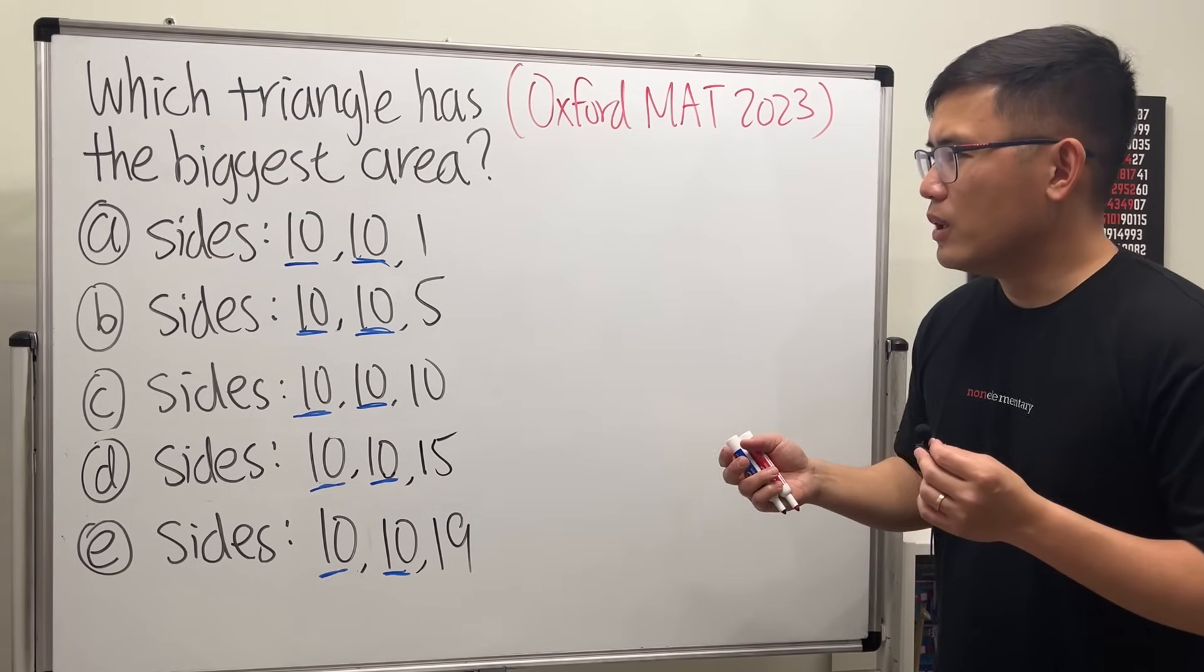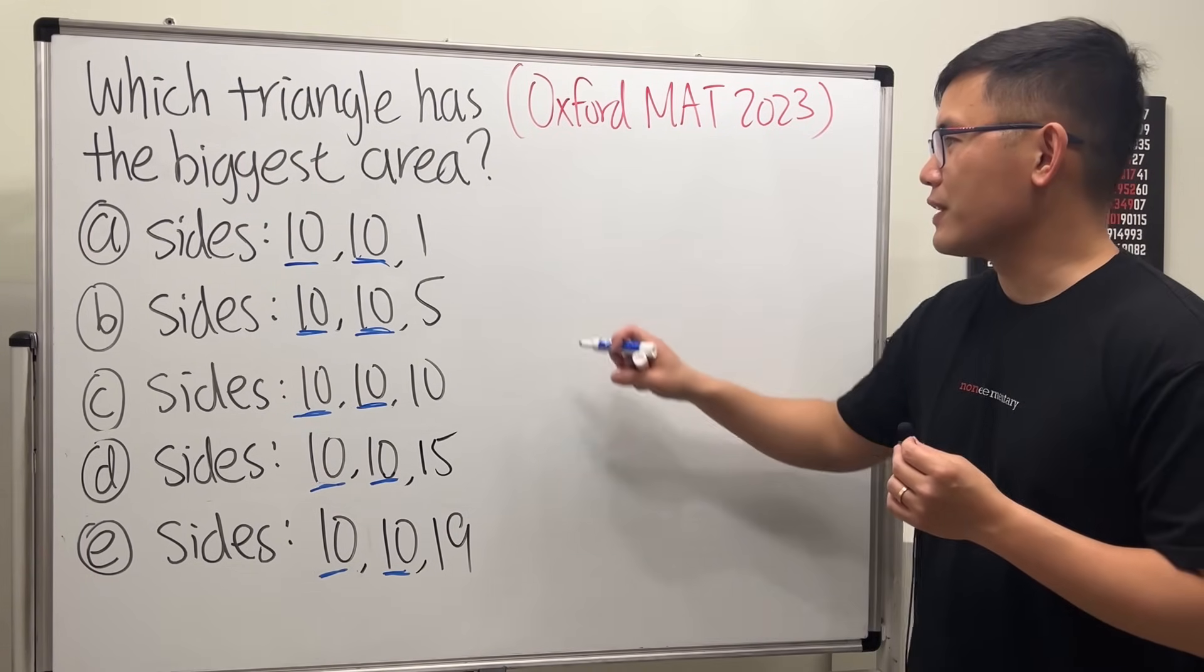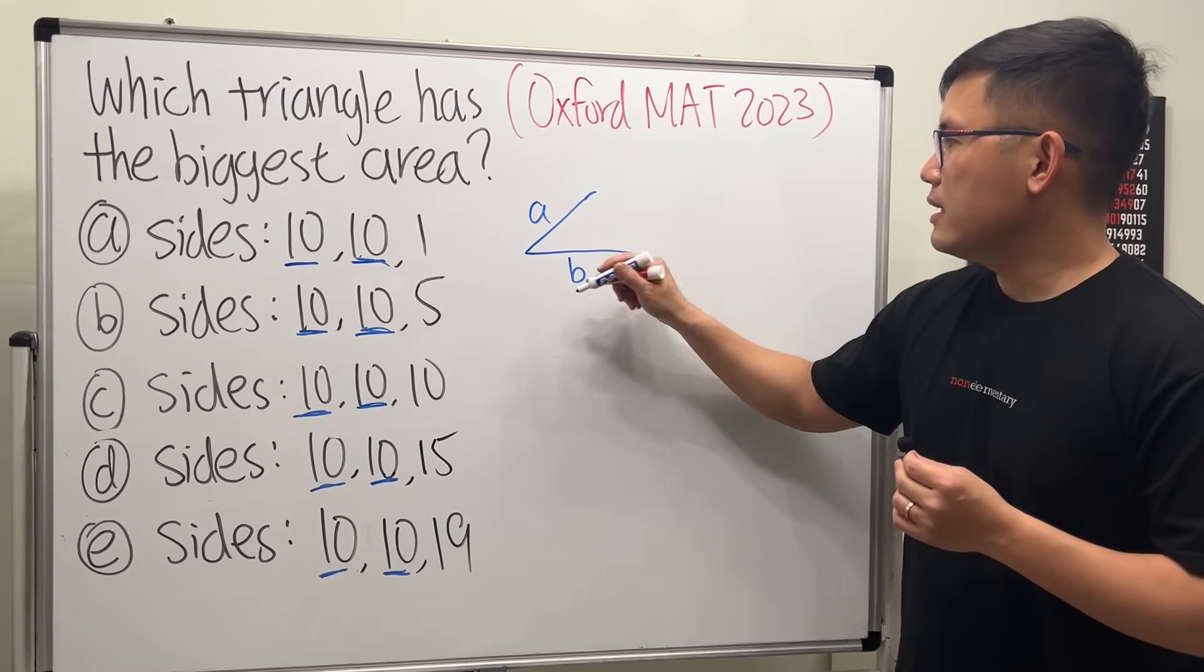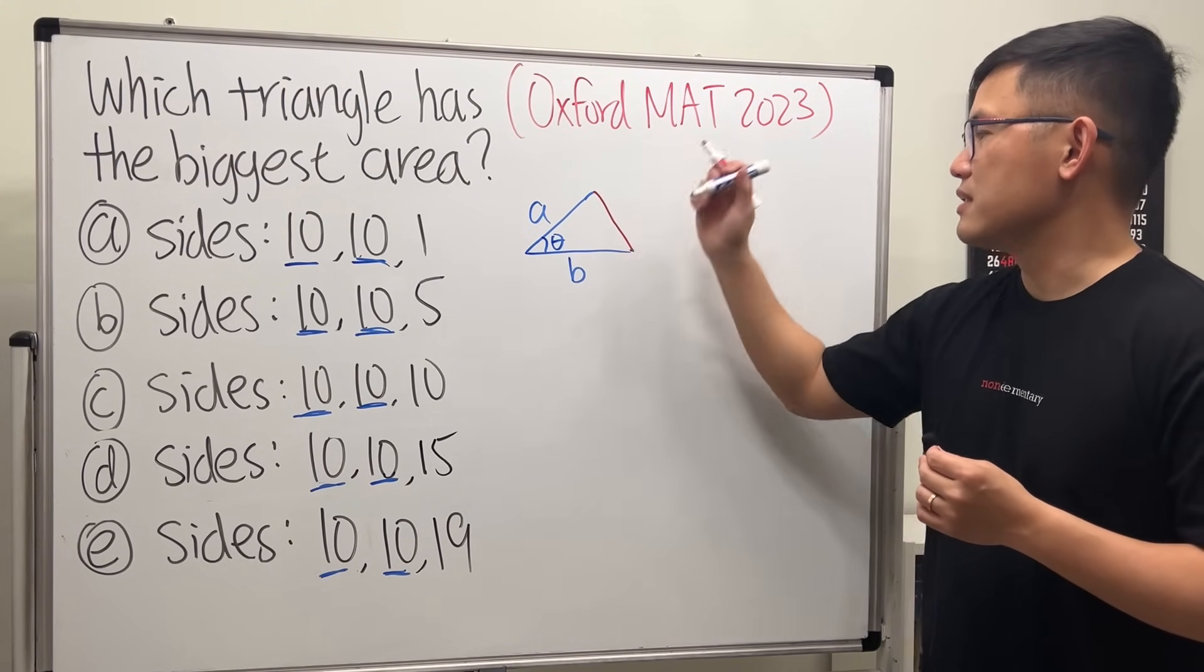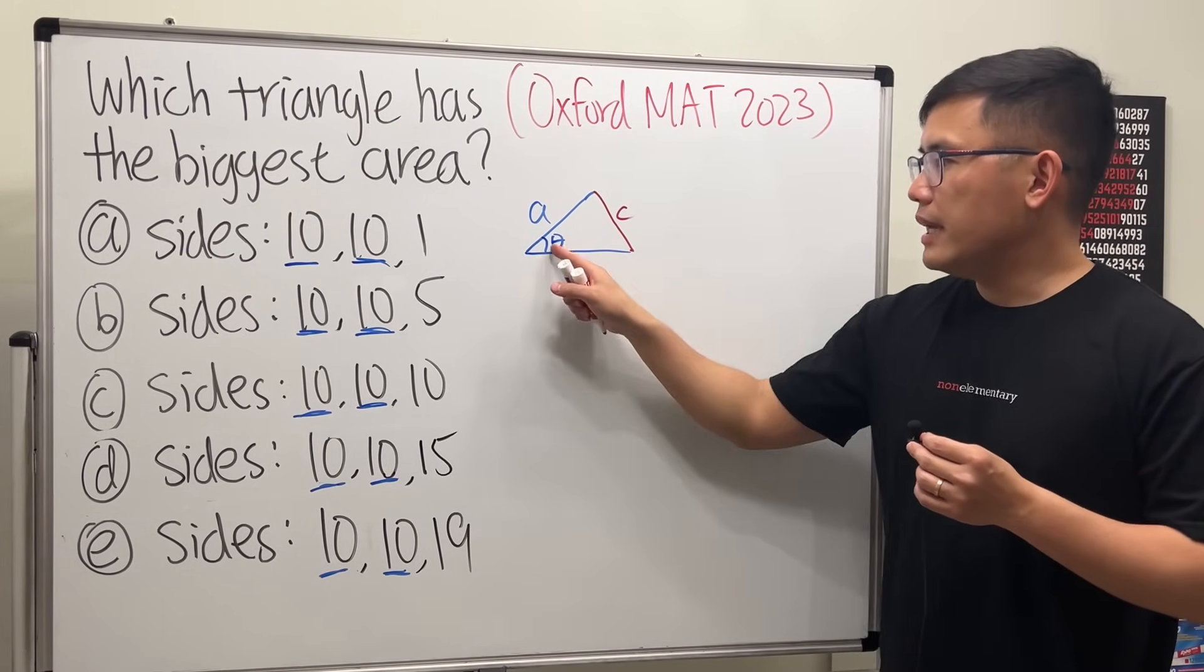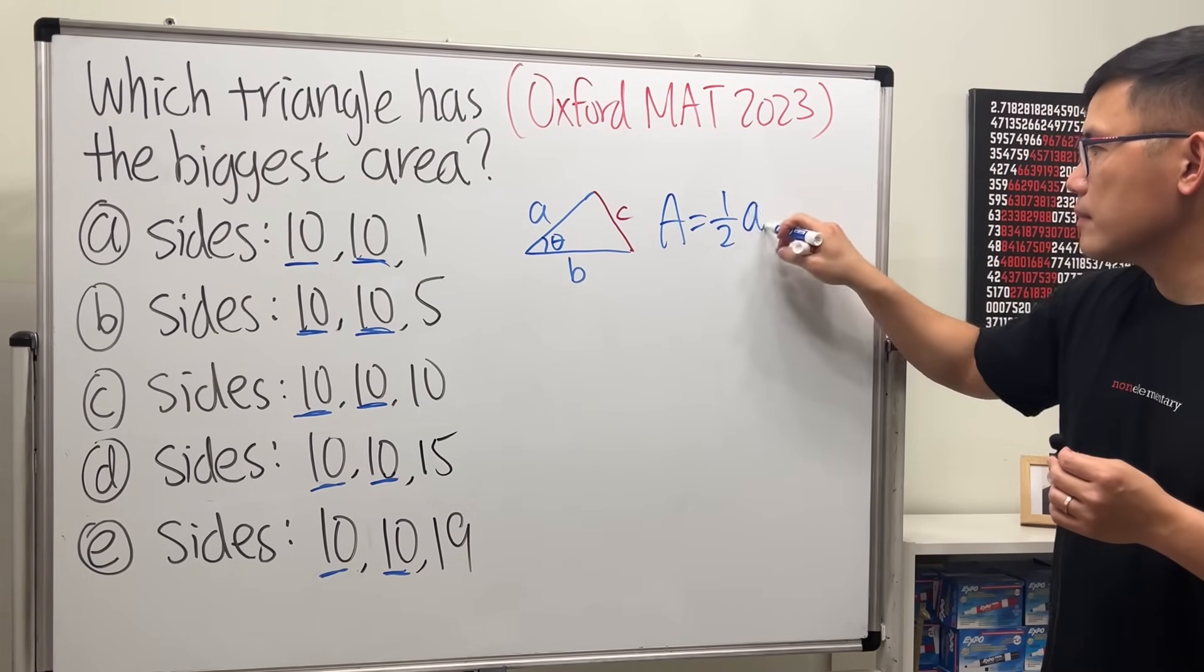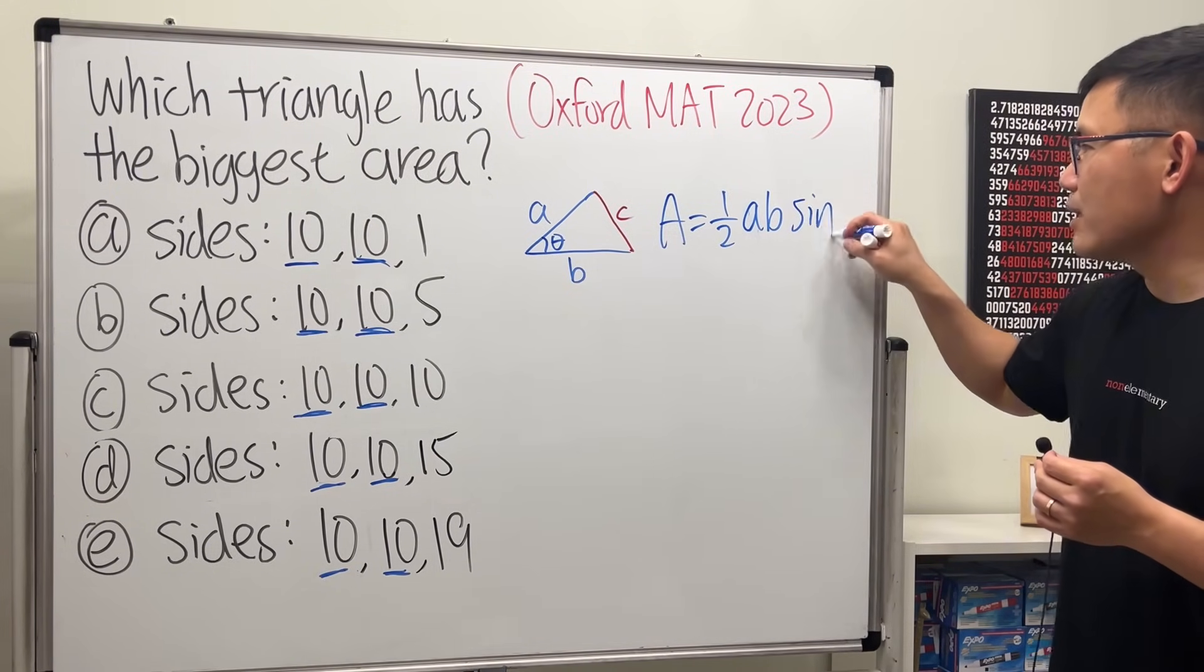If we have a triangle with two sides, how can we find the area? Well, there's actually a nice formula for that. Suppose we have a triangle with two sides - let's say this is a and this is b, and we have an angle theta here, and this is the third side c. If we know a and b and the angle in between, then we know the area is one half times a times b times sine of the angle theta.